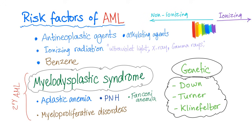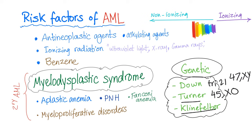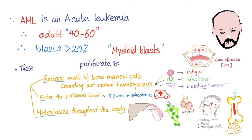Genetic abnormalities that can lead to AML include Down syndrome, Turner syndrome, and Klinefelter syndrome. Down syndrome is trisomy 21: 47,XX or XY. Turner syndrome is 45,X0. Klinefelter is 47,XXY.